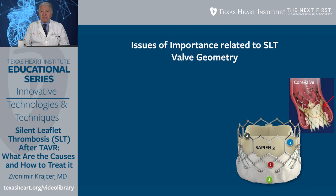Sapien 3 is suited for annular deployment, whereas CoreValve is self-expanding with a nitinol stent frame and porcine leaflets. The newer generation CoreValve also has external porcine material wrapped around the nitinol frame for prevention of perivalvular leak.